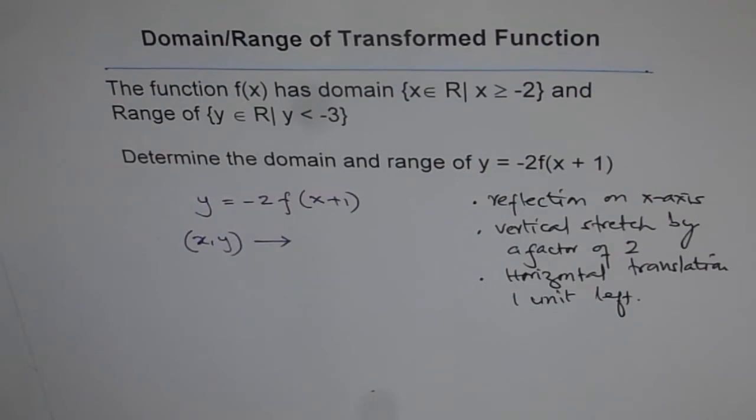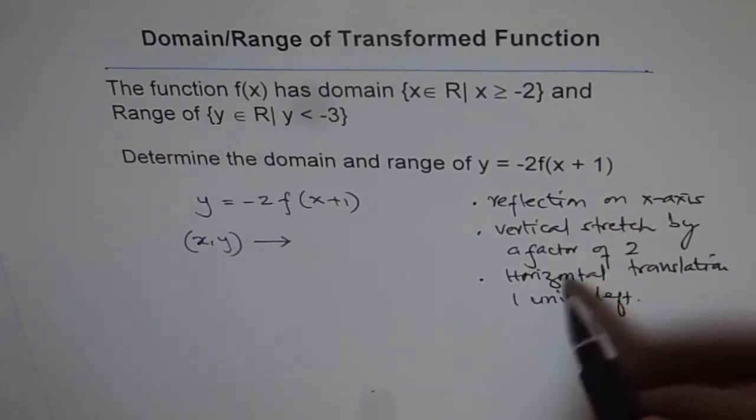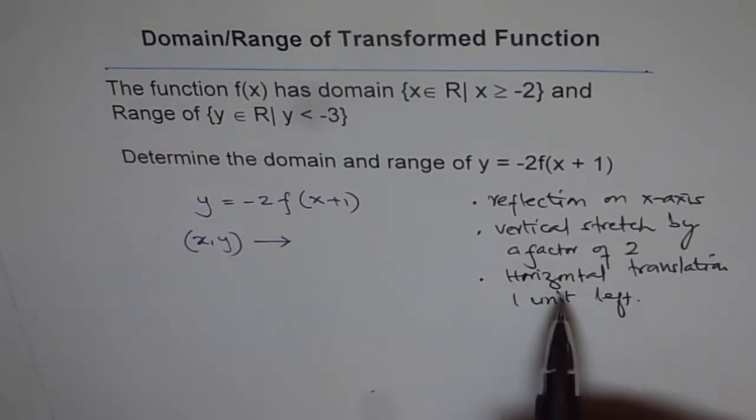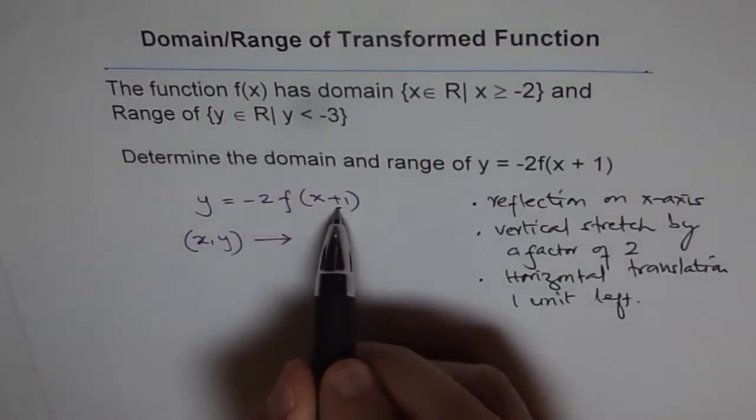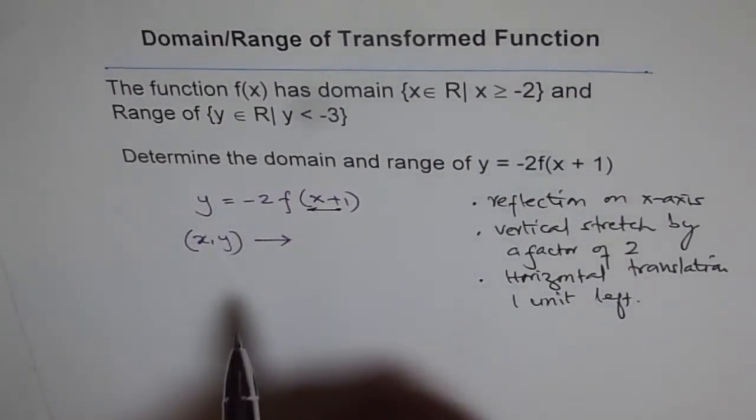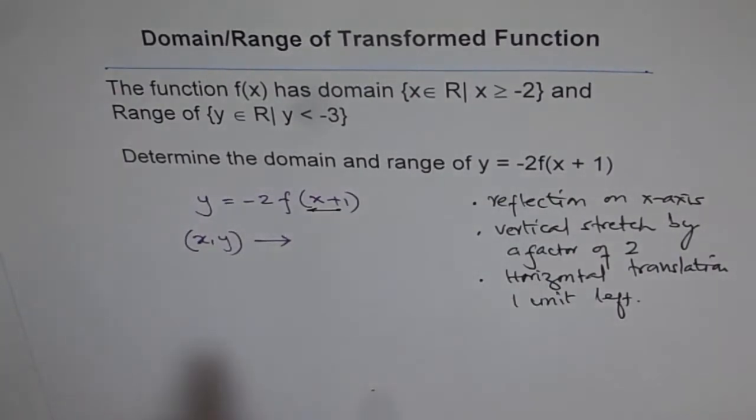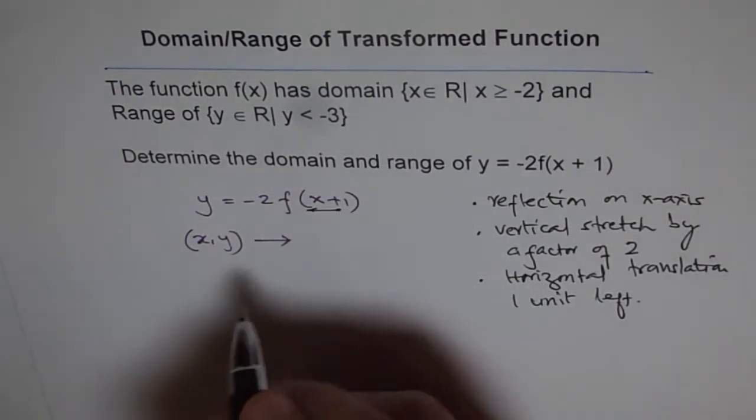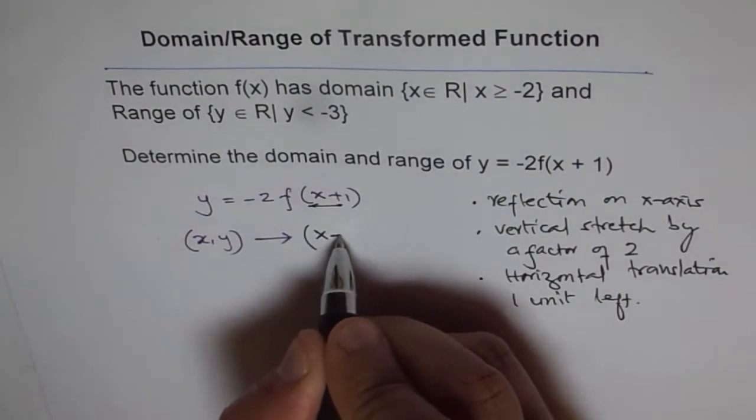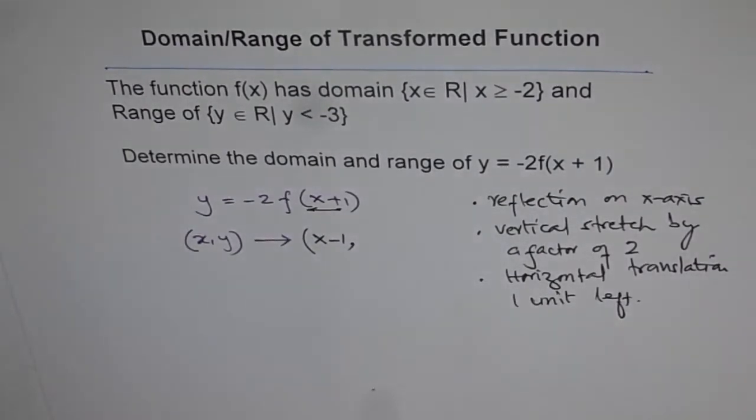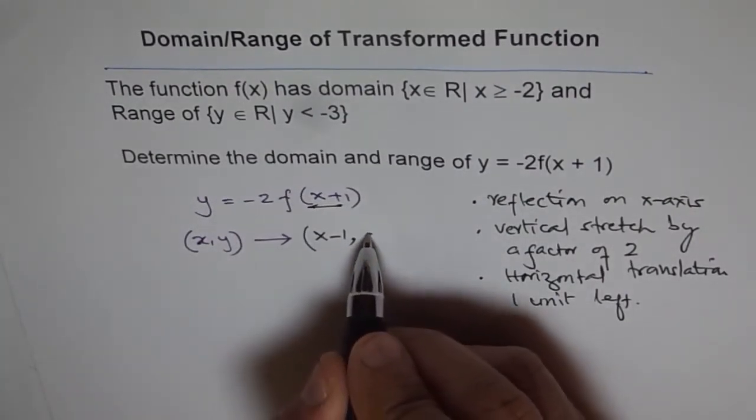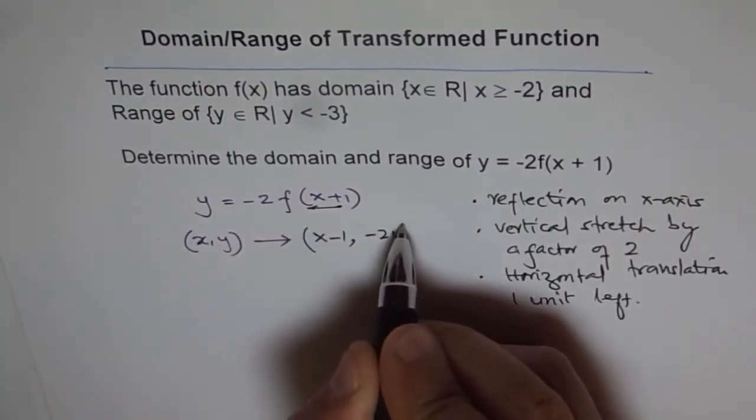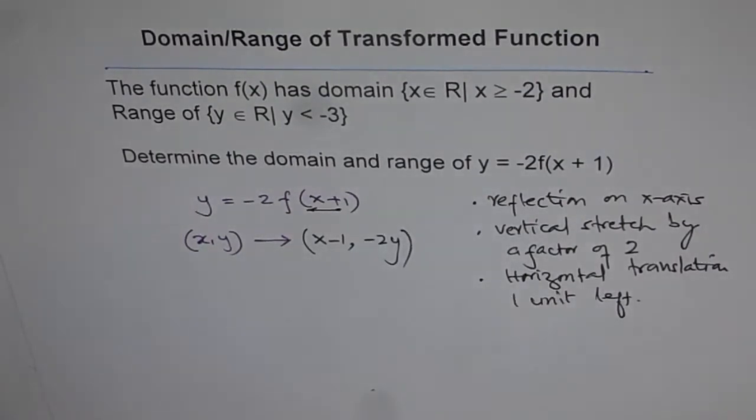The image points will be affected by these transformations. For the x-value, the point moves 1 unit left, so the transformed x-coordinate is x - 1. For the y-value, it gets multiplied by -2, giving -2y. So the transformed points are (x - 1, -2y).